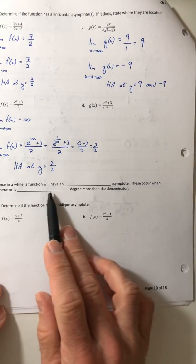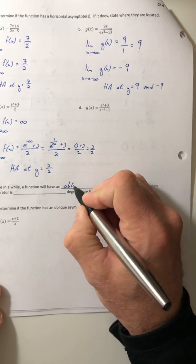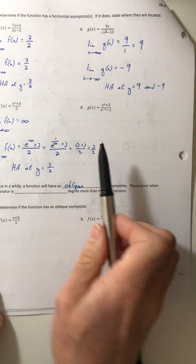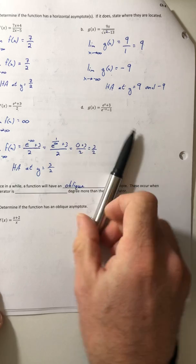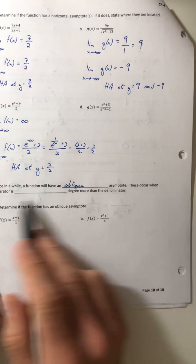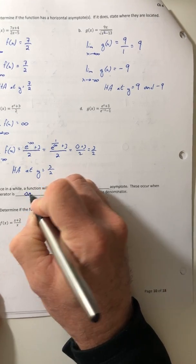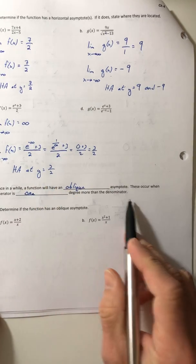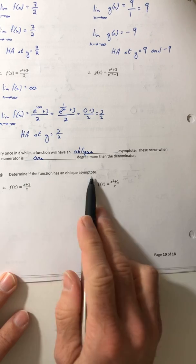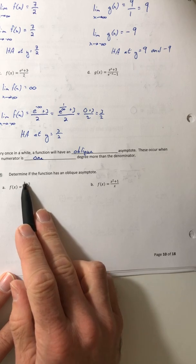So this last part, once in a while a function will have an oblique asymptote. And this is like a diagonal asymptote. So instead of vertical or horizontal, now it's something like that. These occur when the numerator is one degree more than the denominator. So for example, 4, determine if it has an oblique. For part A, the answer would be no, because the degrees are equal.